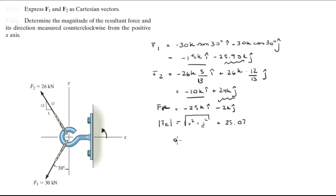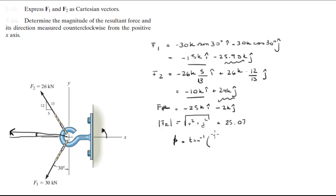To calculate the angle that it forms with the x-axis, first we find phi. The resultant force is negative 25 in the i and negative 2 in the j. To find this angle, we do the tangent inverse of the y over the x component, and we get that the angle phi is equal to 4.57 degrees.